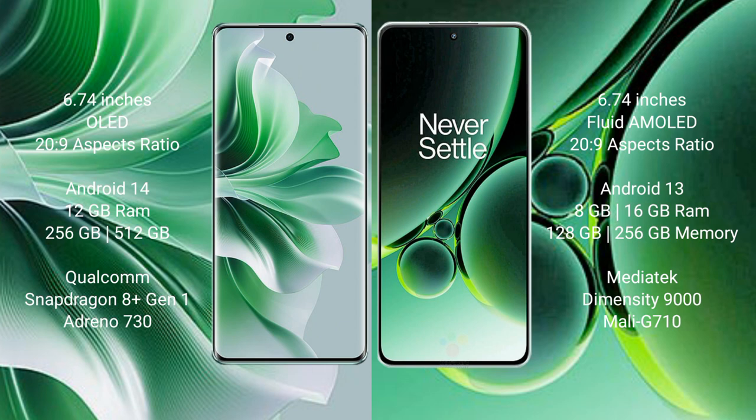256GB or 512GB internal storage, Qualcomm Snapdragon 8 Gen 1 processor, and Adreno 730 GPU. OnePlus Nord 3 comes with 8GB or 16GB RAM and 128GB or 256GB internal storage, MediaTek Dimensity 9000 processor, and Mali-G710 GPU.